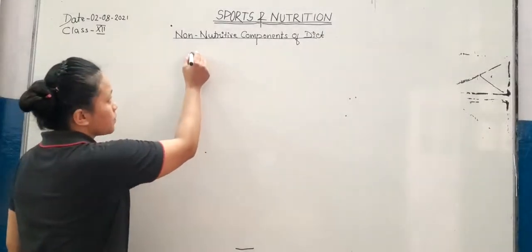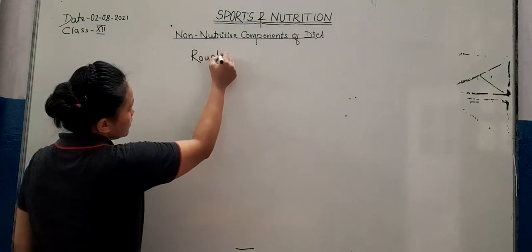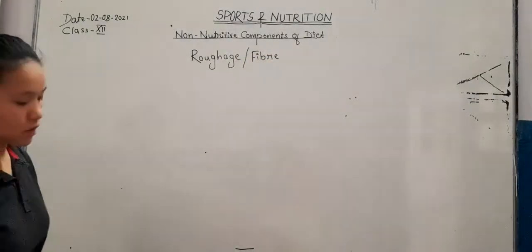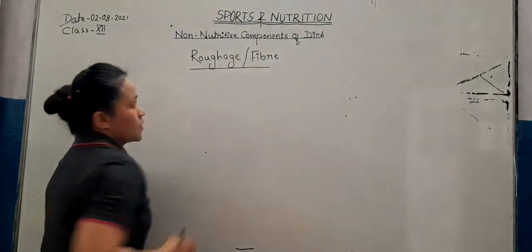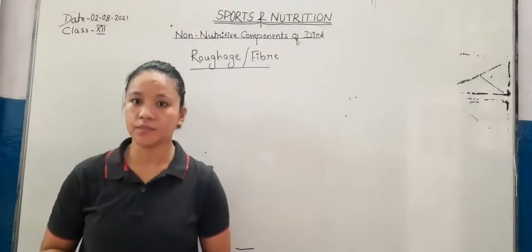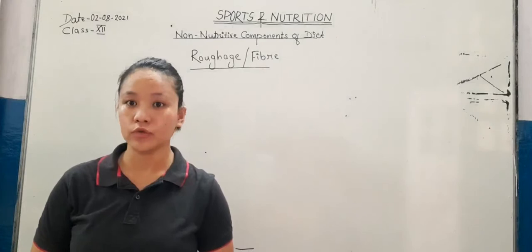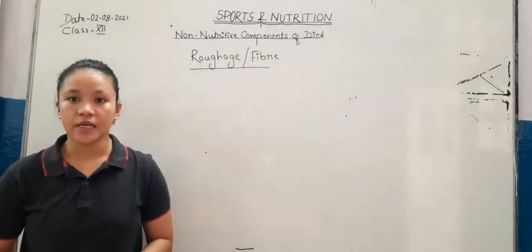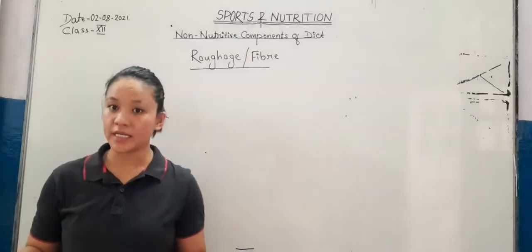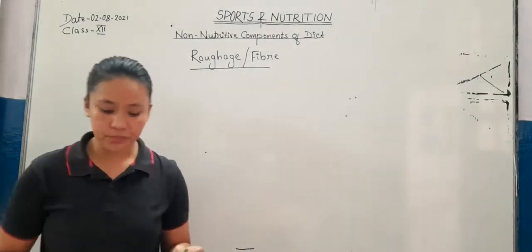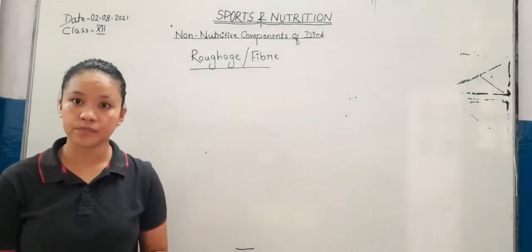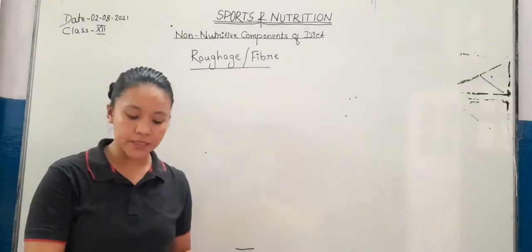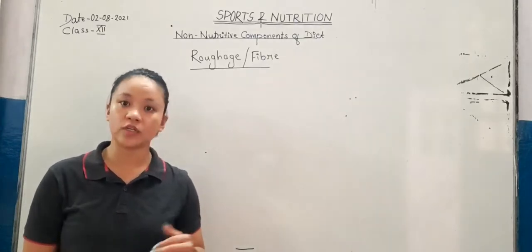Next is roughage, also known as fiber. Roughage is an indigestible portion of food which cannot be digested, but it helps in digestion. Roughage comes from plant-based food. Although we cannot digest it, it helps in digestion and prevents constipation, etc.